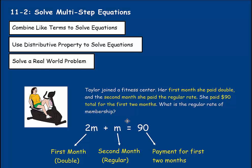Here's an equation that would require a couple steps. Taylor joined a fitness center. Her first month she paid double, and the second month she paid the regular rate. She paid $90 total for the first two months. What is the regular rate of membership? It totals up to $90, so it needs to equal $90. We need to solve for the regular rate of membership — a monthly rate — so that becomes our variable, and we'll make that M for month.